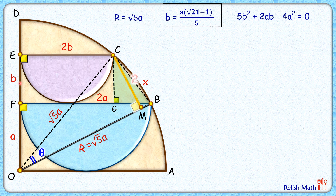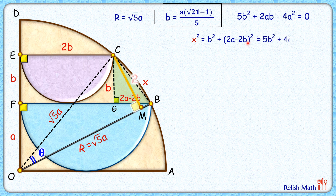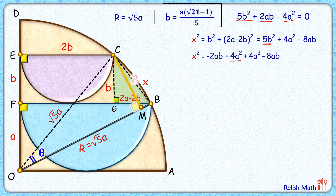CG length equals the radius of the purple semicircle, or b cm. The full length FB is 2a and FG is 2b, so GB = 2a − 2b. Applying Pythagoras theorem to triangle CGB: x² = b² + (2a − 2b)² = 5b² + 4a² − 8ab. Using our earlier result that 5b² = 4a² − 2ab, we substitute to get x² = 8a² − 10ab.